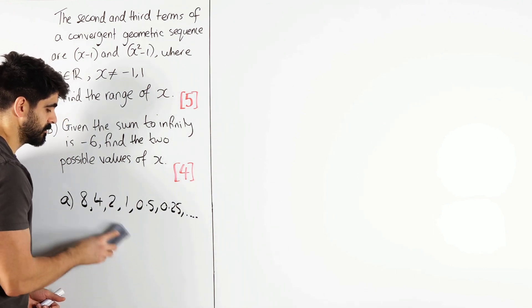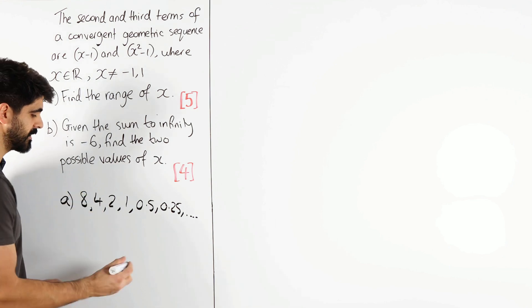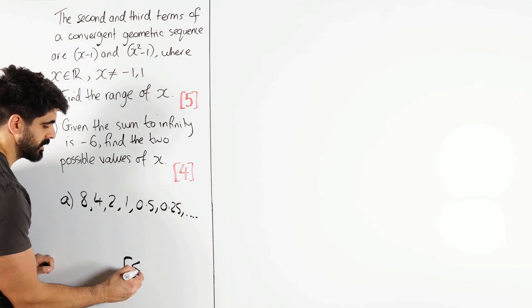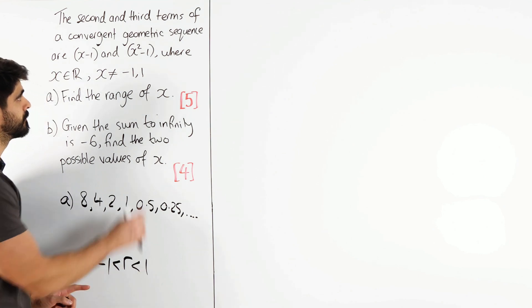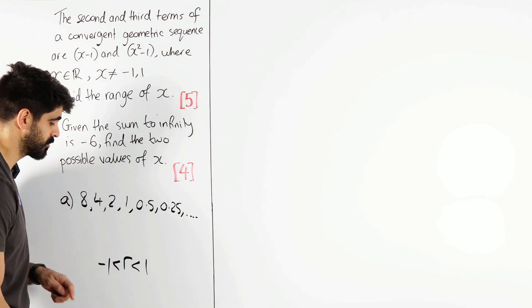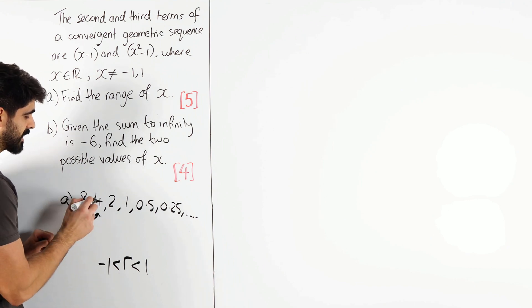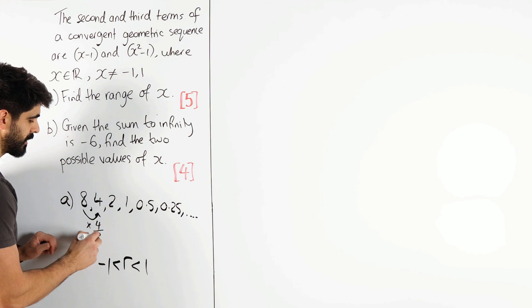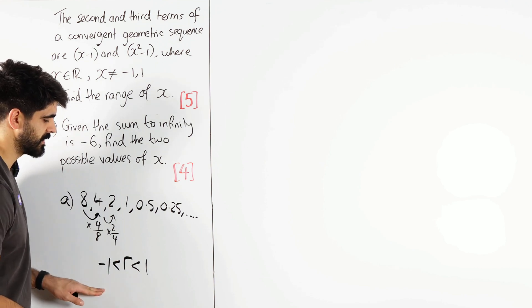Now in terms of sequences, in order for this to happen we must make sure that what we are multiplying by is between 1 and minus 1. And that's the R value. So we have to make sure that our R value is between 1 and minus 1. It can't equal them. Here you can see you're multiplying by a half, which is the second number divided by the first number, 4 over 8. Here we have 2 over 4, etc.